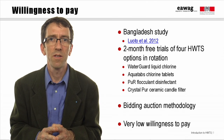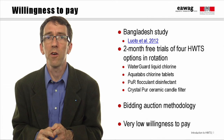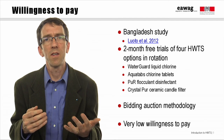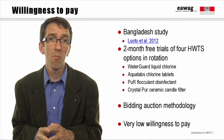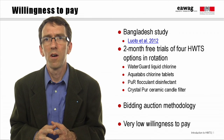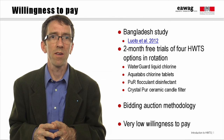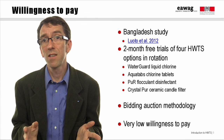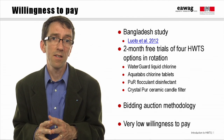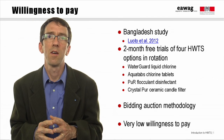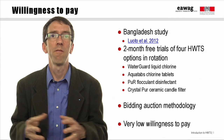Thinking back on different implementation strategies, nearly all HWTS interventions aim to recover at least some costs from users. Public health-oriented interventions may struggle here because they may target populations with very little ability to pay and multiple competing demands on their limited resources. There is a whole field of study called contingent valuation that aims to find out how much people are likely to be willing to pay for a product or service, especially one that is hypothetical or doesn't yet exist. One significant and sophisticated study was done by Jill Luoto and colleagues in Bangladesh, where 600 households were given free two-month trials of each of four HWTS options in rotation following a random sequence.